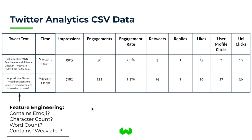Twitter analytics gives you a CSV data file with different columns like the raw content of the tweet itself, as well as features like what time the tweet was sent, and metrics like impressions, engagements, engagement rate, retweets, replies, likes, user profile clicks, or URL clicks. The most interesting detail about applying vector search is understanding semantic representations from raw unstructured text, rather than feature engineering approaches where we manually extract features like whether the tweet contains an emoji, character count, word count, or specific keyword phrases.